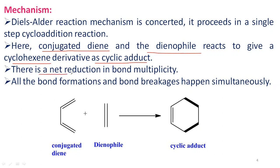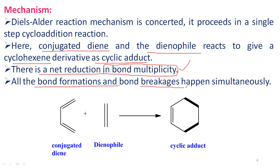There is a net reduction in bond multiplicity — meaning the number of double bonds is decreased. All bond formations and bond breaking happen simultaneously in a single step, which is the concerted mechanism.